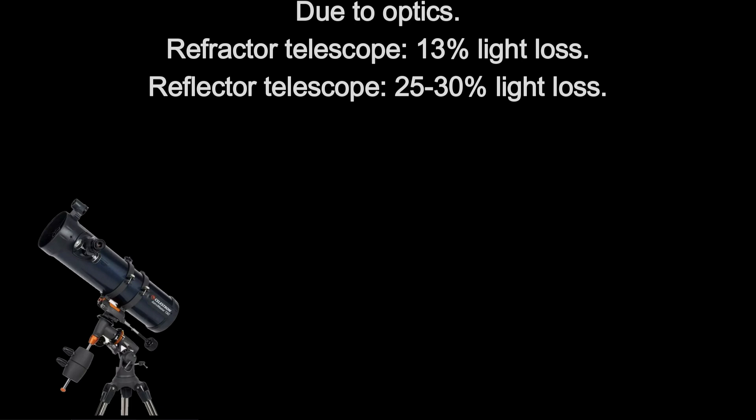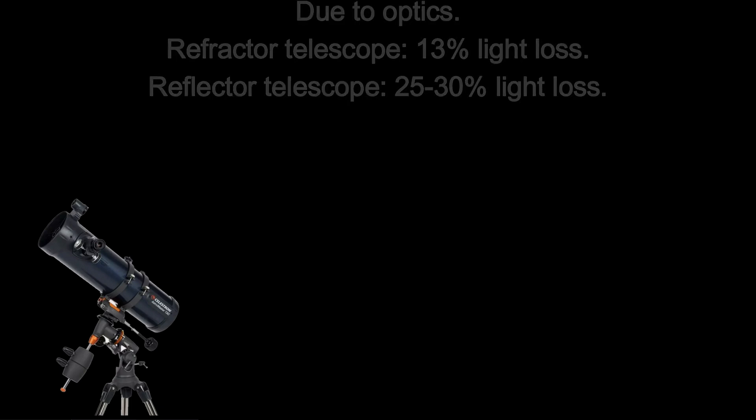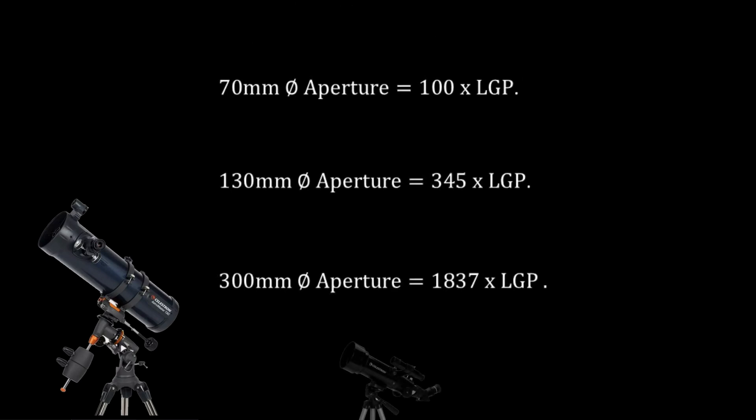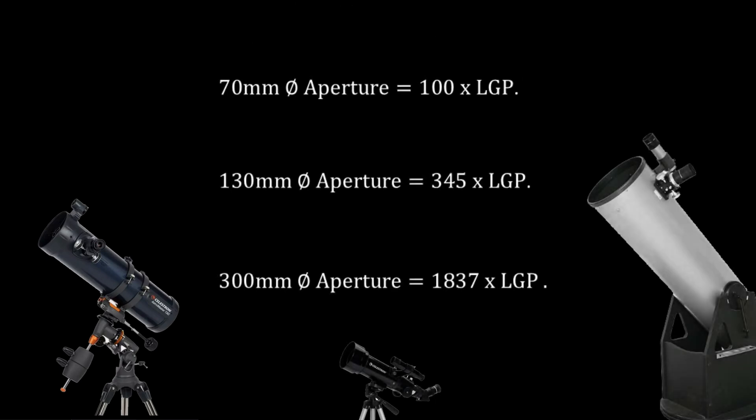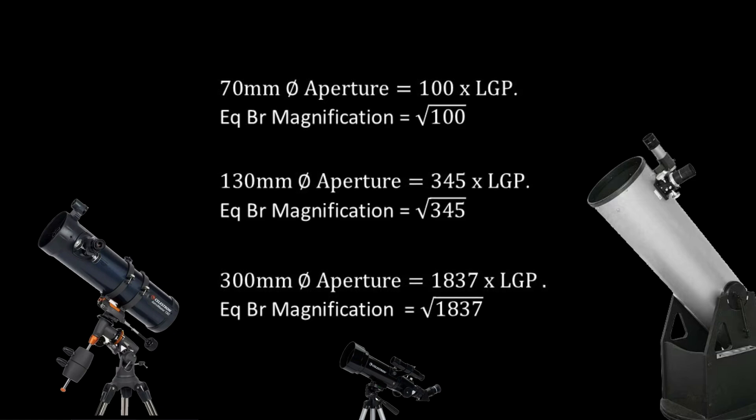Yes, they do collect more light, but there are limitations to how much you can magnify. Here are three different aperture sizes with their light-gathering power. The square root of the light-gathering power gives you the maximum magnification to get equal brightness with a larger image.